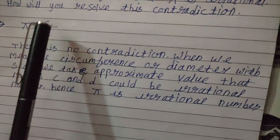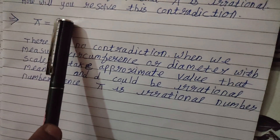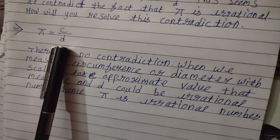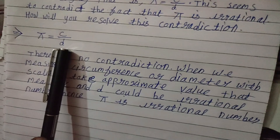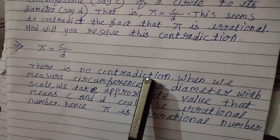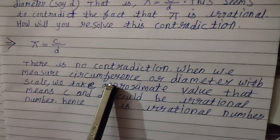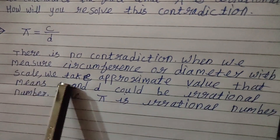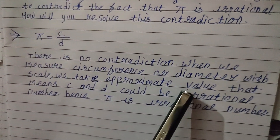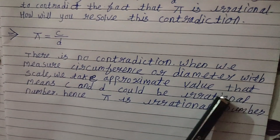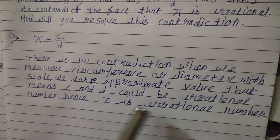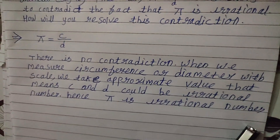Pi equals the ratio of circumference — the length of the boundary of the circle — to the diameter, which is the line segment joining any two points on the circle and passing through the center. There is no contradiction. When we measure circumference or diameter with a scale, we take approximate values; we never get exact values. That means C and D could be irrational numbers, and that is why pi is an irrational number.